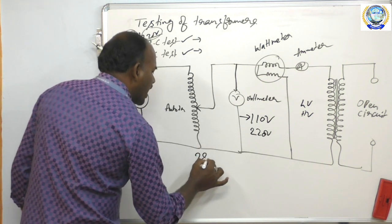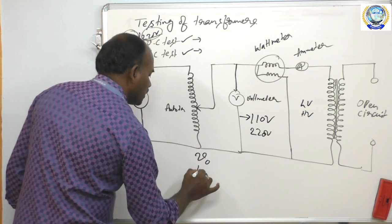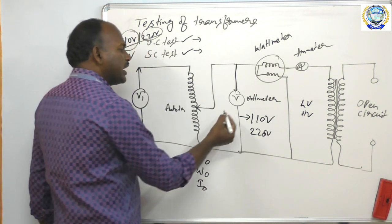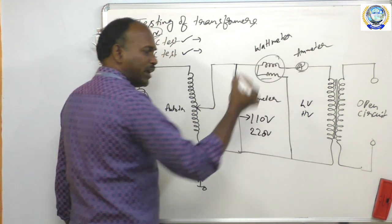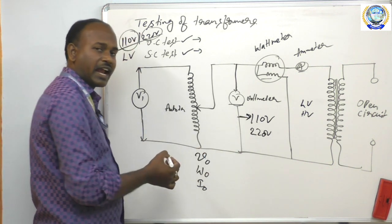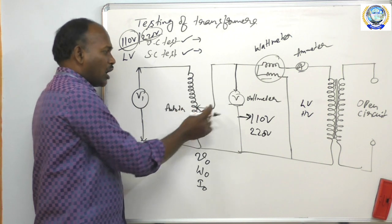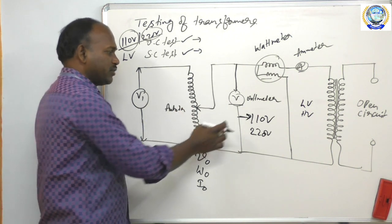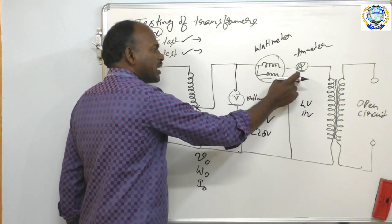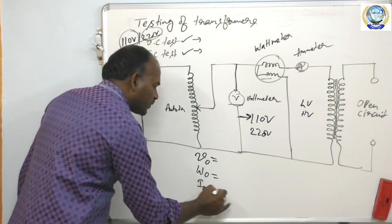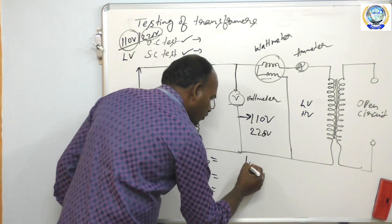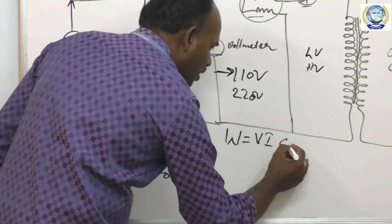You will get the values of V0, W0, and I0 by observing the readings of the voltmeter, wattmeter, and ammeter. Vary the auto transformer until the voltmeter reads 110V, then take a set of readings. Using the formula W = VI cos φ, from the wattmeter reading W, voltage V, and current I, you calculate the value of cos φ.